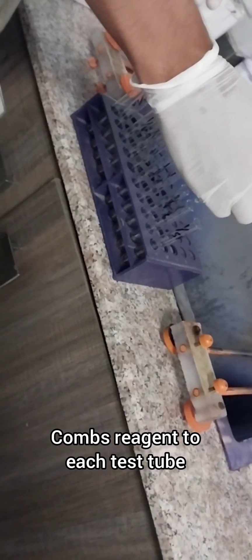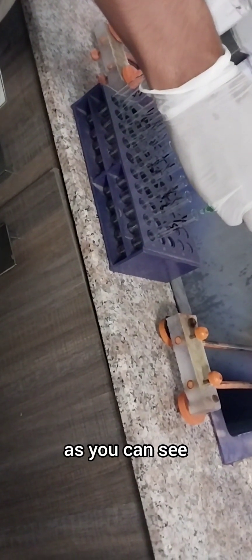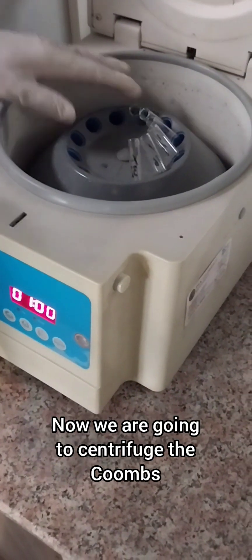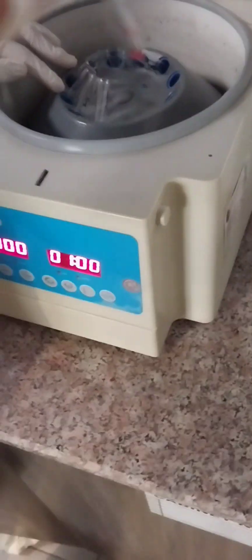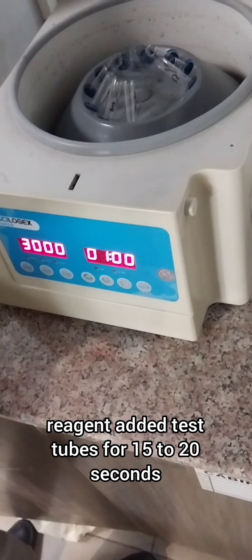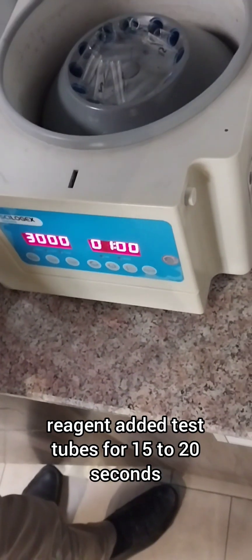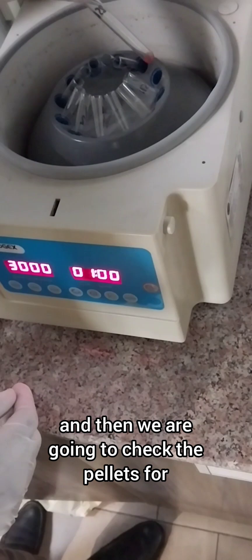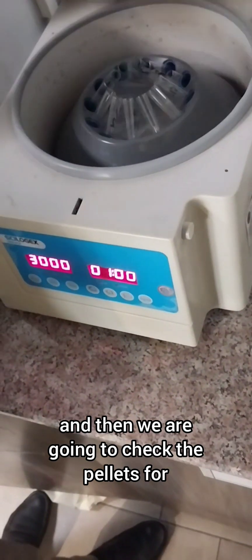Now we are going to centrifuge the Coombs reagent added test tubes for 15 to 20 seconds at 3400 rpm again. Then we are going to check the pellets for agglutination. This is the last step.